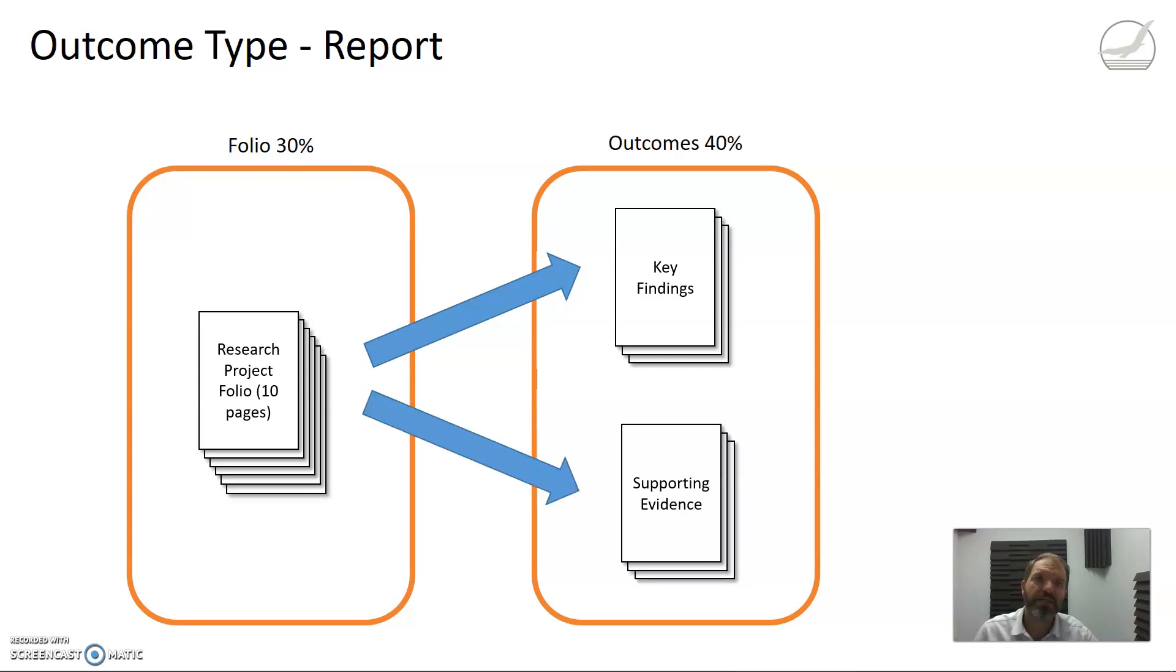Each of those key findings needs to be supported by evidence. The more evidence you have and the greater the range of sources and the higher the validity, accuracy, and reliability of those sources, the better. In a report, you would basically divide that up into your key findings and then the evidence that supports those.